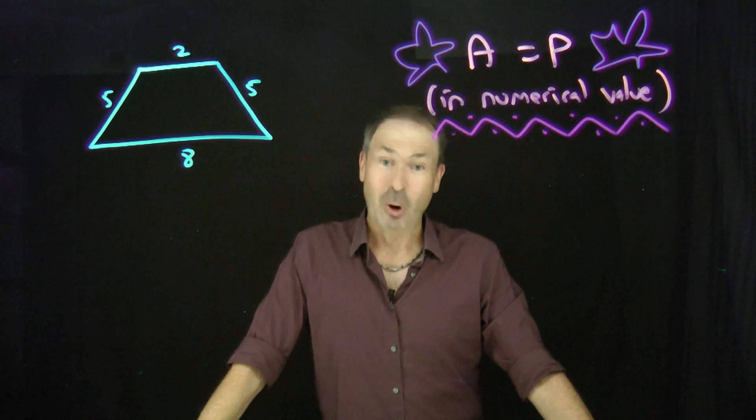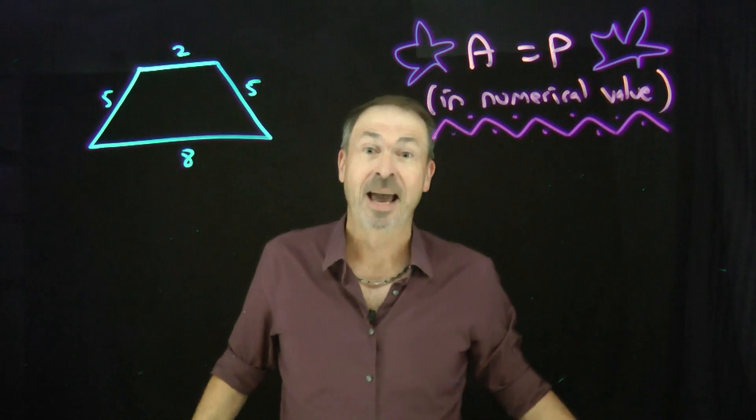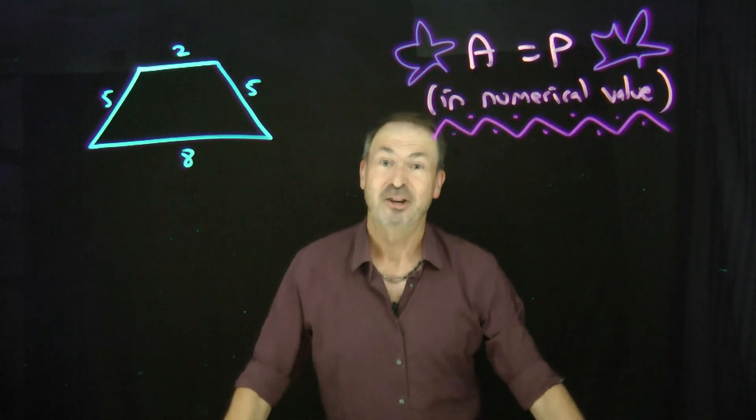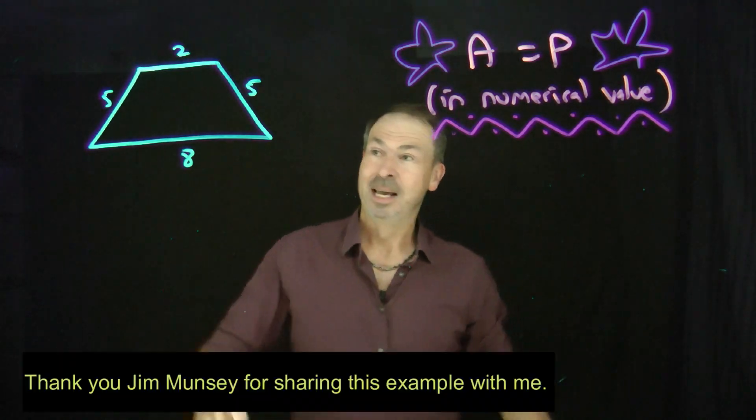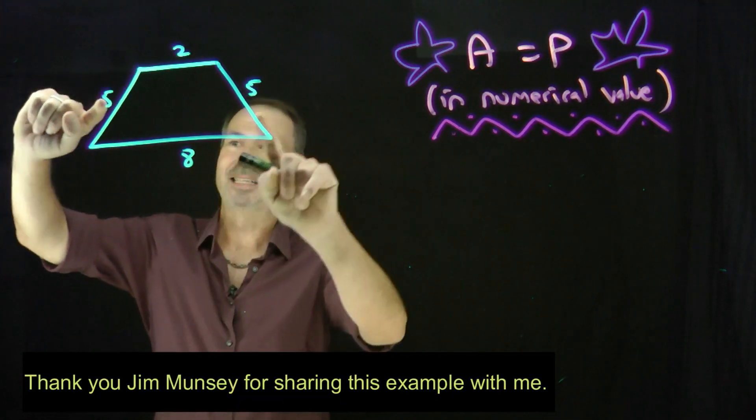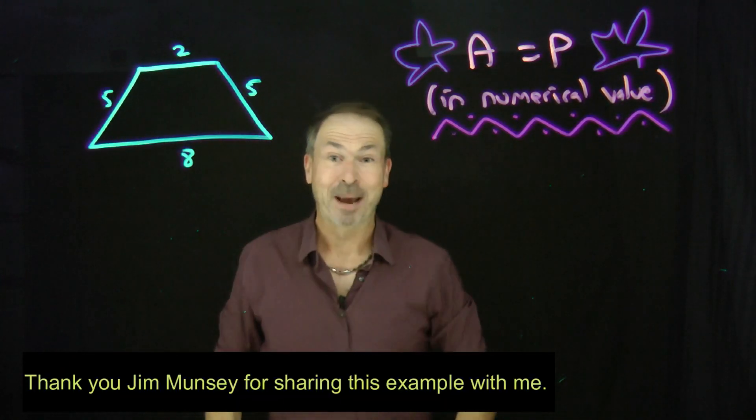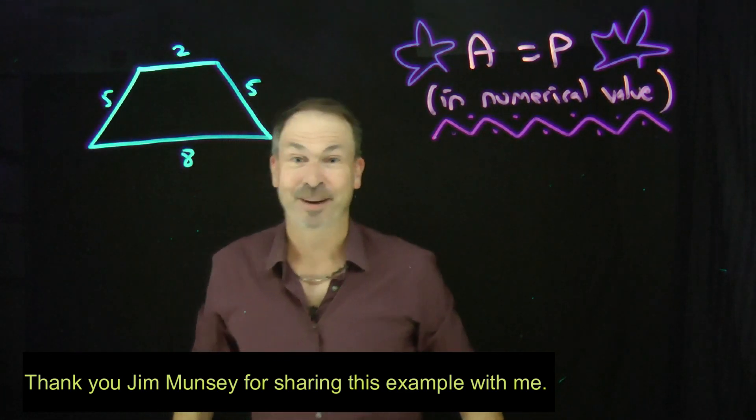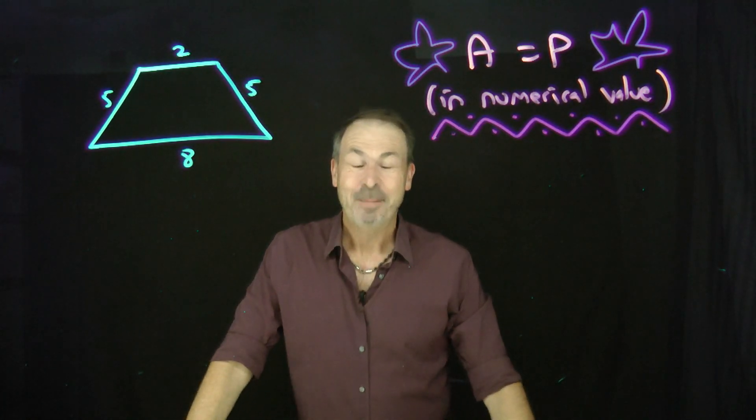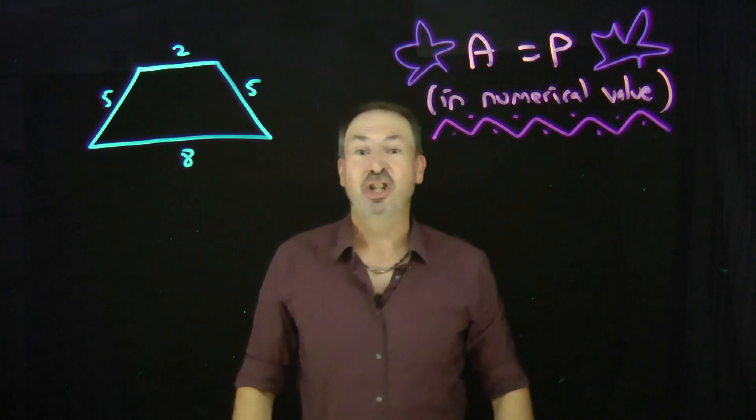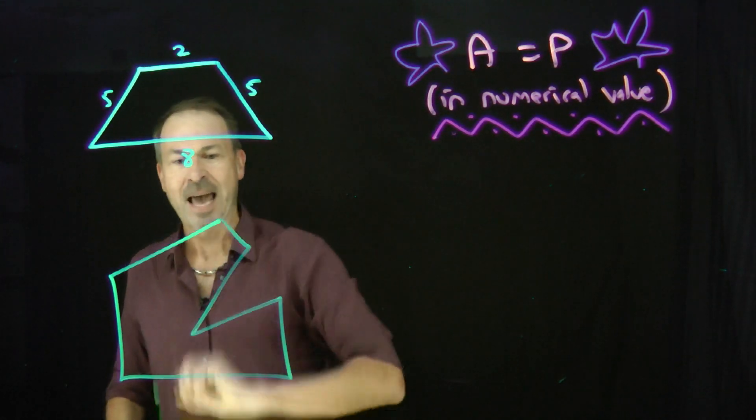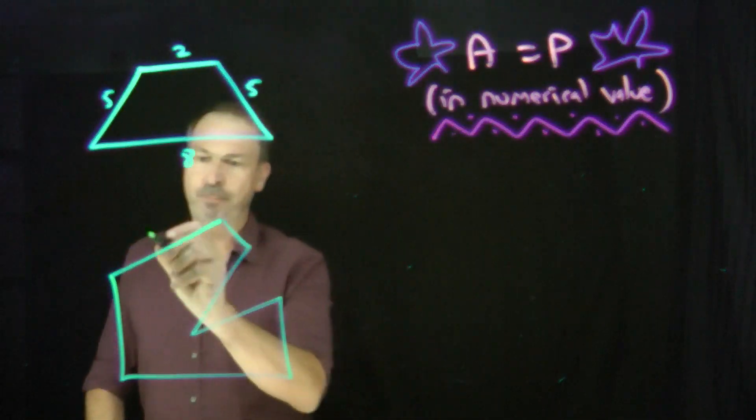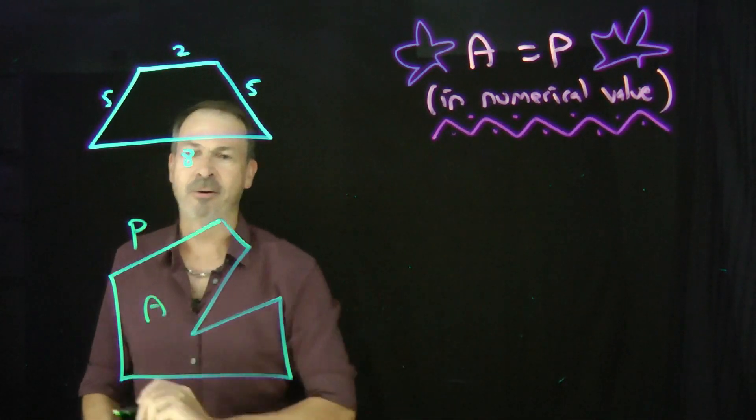Of course, now we want to find all sorts of shapes with integer side lengths having area equal to perimeter, at least in numerical value. For example, here's yet another one. This isosceles trapezoid has bases 2 and 8, has legs 5 and 5, and check me, its area equals its perimeter in numerical value. But here's the thing. We can actually make this happen for any shape we like. We can actually take any given shape. So here's a strange shape. Let's say its perimeter is currently P and its area is currently A.